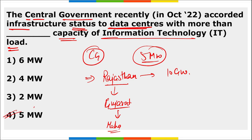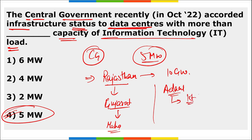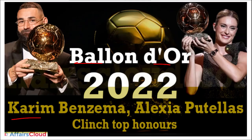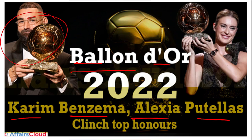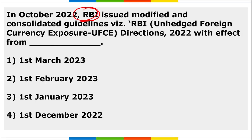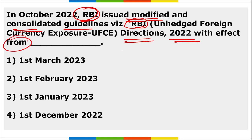Adani Green Energy is developing India's first-of-its-kind largest hybrid power project generating both wind and solar energy — approximately 660 megawatts in total. Karim Benzema and Alexia Putellas were honoured with the Ballon d'Or award for men's and women's categories respectively. It is the second time Putellas has won; it is Benzema's first time, apart from Messi and Ronaldo. RBI issued modified consolidated guidelines effective from 1st January 2023.